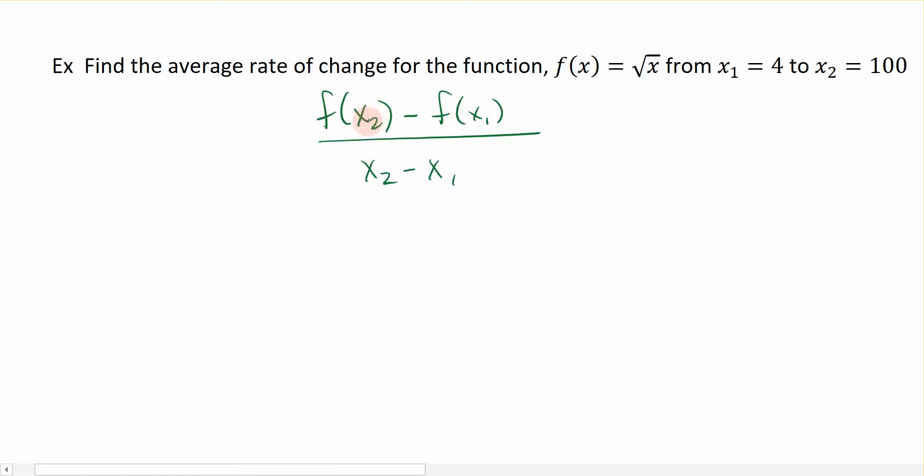Well, how do I know what the function evaluated at x2 is? This is the function. So if the function f(x) is equal to the square root of x, then I'm going to plug in x1. So the function at x1 has to be the square root of 4, and the square root of 4 is 2. Now, the function evaluated at x2 is the square root of 100, which is 10.